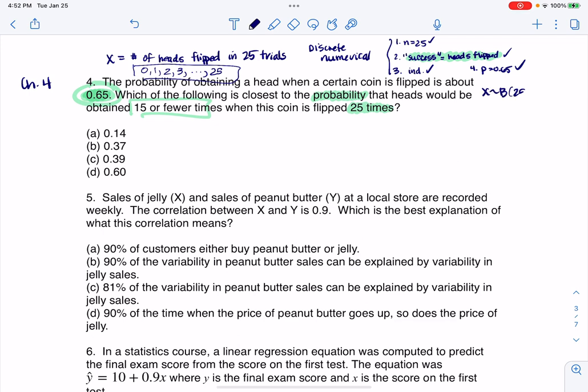So I have 25 trials, and the chance of success on one individual trial is 65%. But we're going to look over the probability of getting 15 or fewer successes over the course of this entire experiment. So I want the probability that X is, now 15 or fewer means less than or equal to 15. And we have a direct calculator command for that. We have binomial CDF. And I would go ahead and enter 25, that's the number of trials, 65%, and then 15.